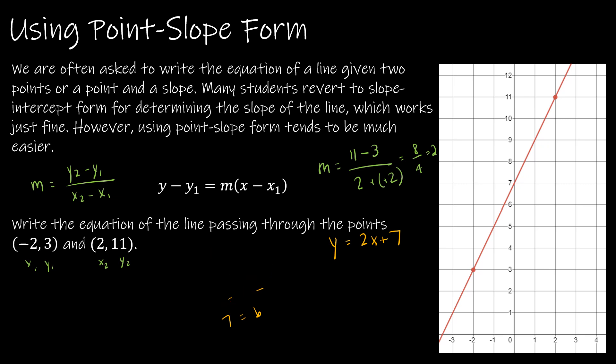Point-slope form looks like this, where we say y minus the y value. So I'm going to use that same point. y minus 11 equals the slope, which is 2, and then x minus the x value. So I get y minus 11 equals 2x minus 4. I add 11 to each side to get y equals 2x plus 7. Notice I get the same equation, but often it's going to be easier to use point-slope form. You'll never get points counted off by using point-slope instead of slope-intercept, but just know that that's a tool in your tool belt.